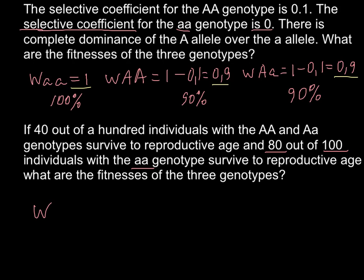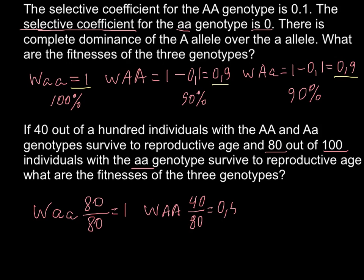W for the fitness of the homozygous recessive — we use it as the base for our calculations. We have a survival rate of 80, so we divide 80 by 80 and get fitness equal to 1. Now we can find the other genotypes. For the homozygous dominant, we divide 40 by 80, and fitness equals 0.5. The fitness of the heterozygous genotype is also 40 divided by 80, which equals 0.5.